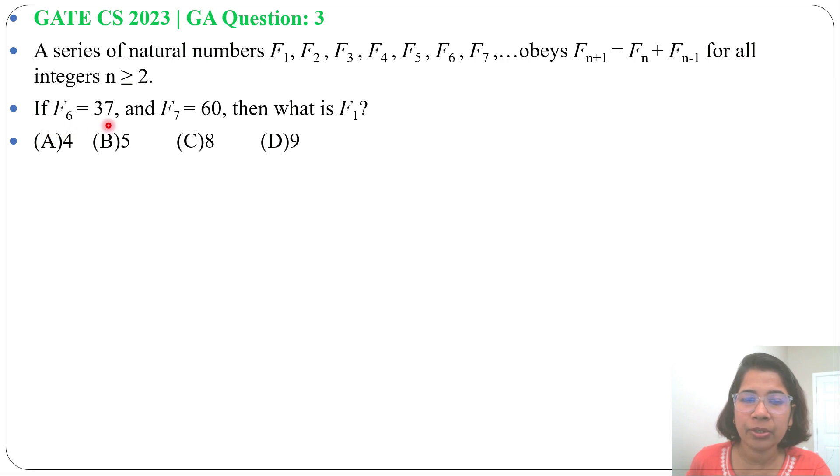If f(6) = 37 and f(7) = 60, then what is f(1)? Four options are given. This is the same as the Fibonacci number sequence formula, but f(6) is 37 and f(7) is 60.